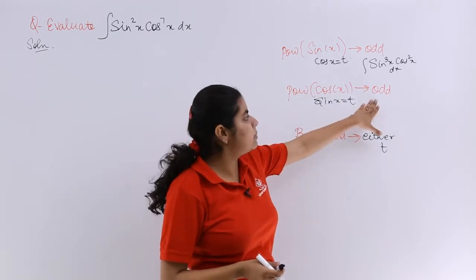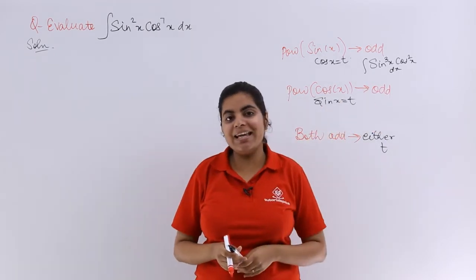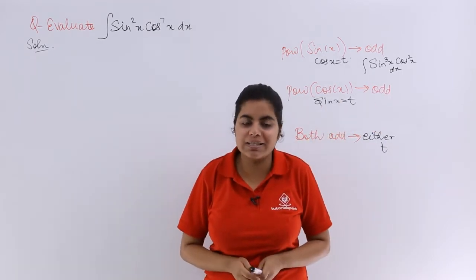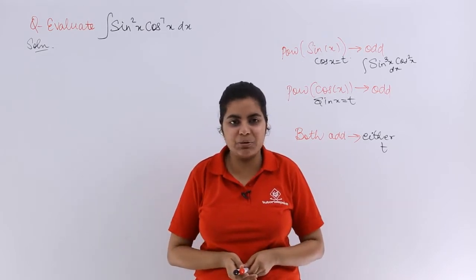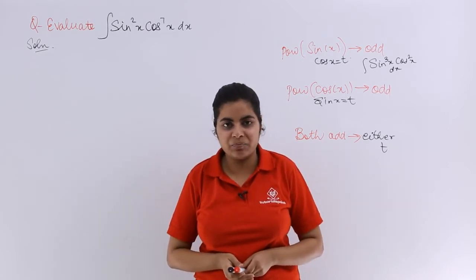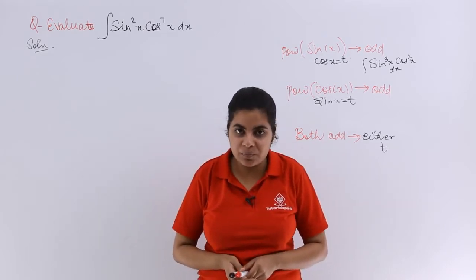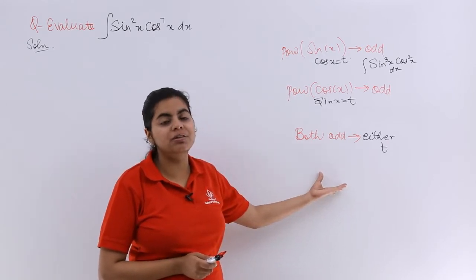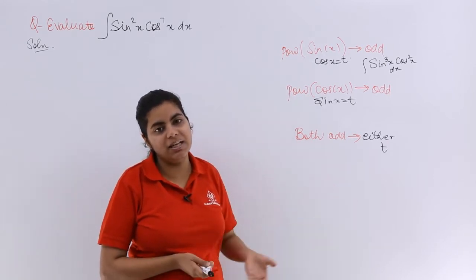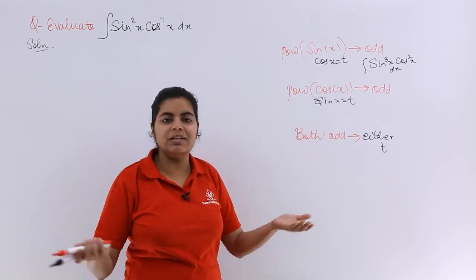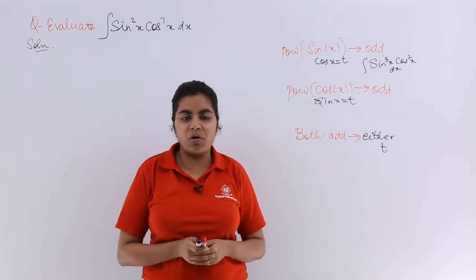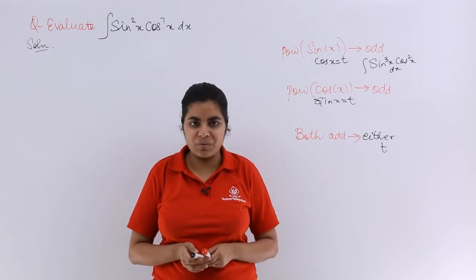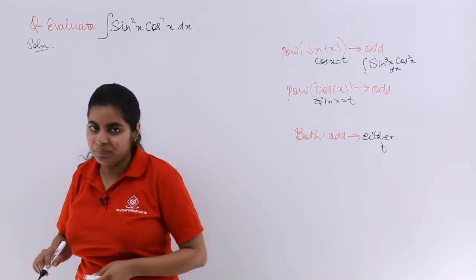Since the power of cos is odd, we put sin x equal to t. Also, if both powers are even, the approach is different — that kind of question we have already done and will do again. So let's see the solution.